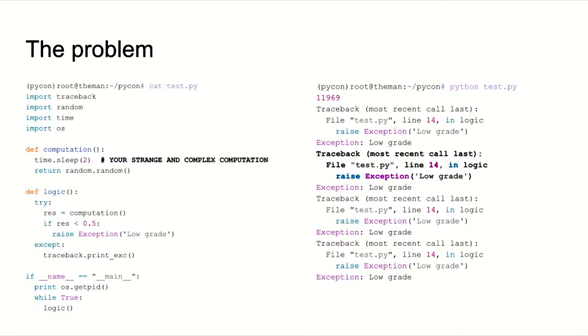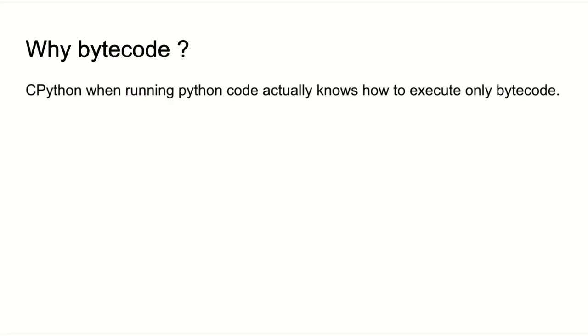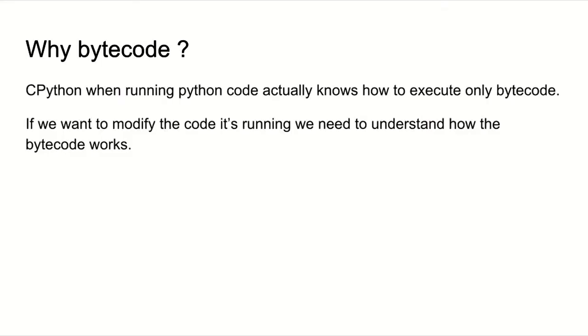This talk is mostly based on CPython 2 conventions, but most of the stuff is just a name change in CPython 3. The problem I'm trying to solve is: I have a simple program which runs in a loop and does some computation. Once in a while you get an exception, you're not sure what's going on, and you want - without taking down the program - to look at what is going on. Why are we talking about bytecode? CPython, when it runs your Python code, actually only knows how to execute the bytecode, not the source code. If you want to modify the code, you need to understand how the bytecode system works.